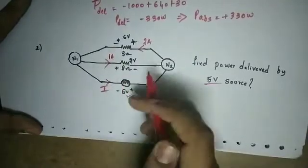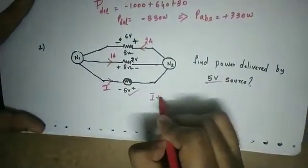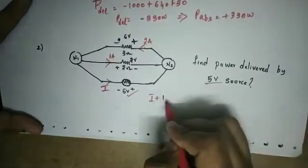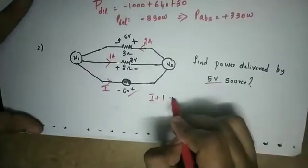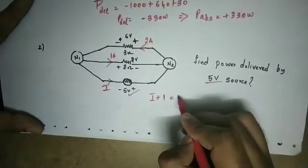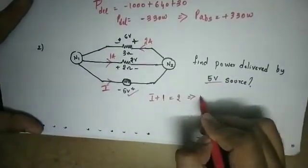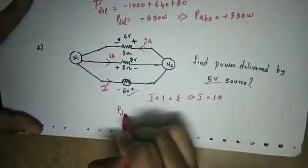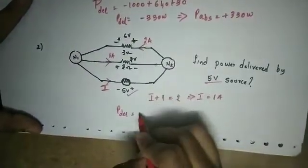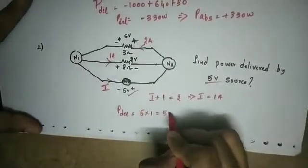According to KCL, sum of currents towards the node equals sum of currents away from the node. At this node: I plus 1 equals 2 amps, so I equals 1 amp. Power delivered by the 5 volt source is voltage into current, so 5 into 1 equals 5 watts.